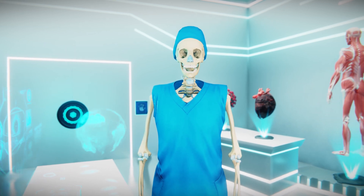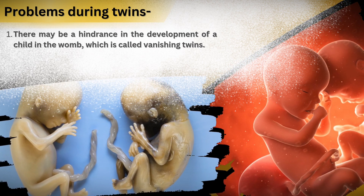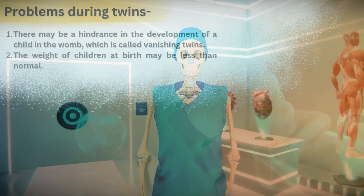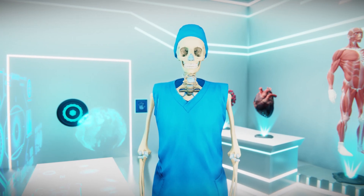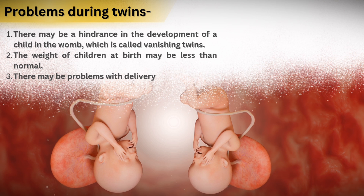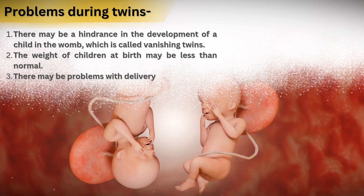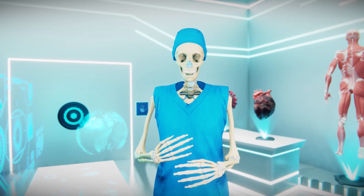Sometimes when twin babies are born, one baby's development is normal but the other baby's development is delayed — this is called vanishing twins. Another problem is that their weight can be less than normal. There can also be problems during delivery. If both babies have their heads down, normal delivery can be attempted. But if one baby's head is down and the other's head is up, normal delivery becomes very difficult and doctors perform a C-section.